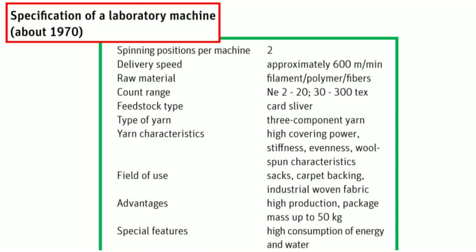This table gives the technical specifications of a laboratory machine. Spinning positions per machine is 2. Delivery speed is approximately 600 meters per minute. Count range is 2 to 20 English cotton count. Feedstock type is card sliver, and the type of delivered yarn is a 3-component yarn. Yarn characteristics include high covering power, stiffness, evenness, and wool spun characteristics. Field of use includes sacks, carpet backing, and industrial woven fabric. Advantage is high production with package mass up to 50 kg. A special feature is high consumption of energy and water.